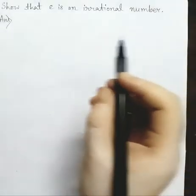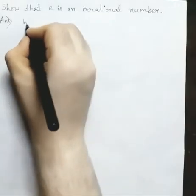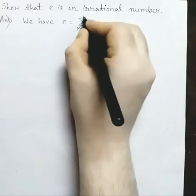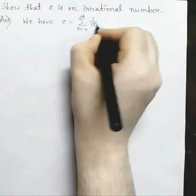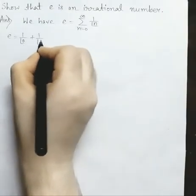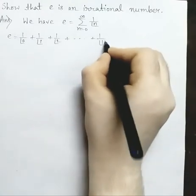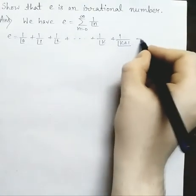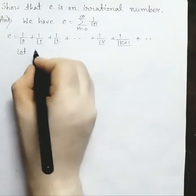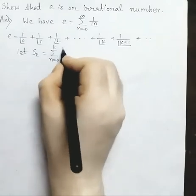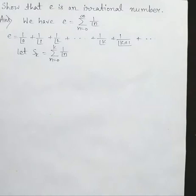e is an irrational number. We have e equal to summation over n equal to 0 to infinity of 1 by factorial of n, that is equal to 1 by factorial of 0 plus 1 by factorial of 1 plus 1 by factorial of 2 plus dot dot plus 1 by factorial of k plus 1 by factorial of k plus 1 plus dot dot. Let S_k equal to summation over n equal to 0 to k of 1 by factorial of n, that is S_k equal to 1 by factorial of 0 plus 1 by factorial of 1 plus 1 by factorial of 2 plus dot dot plus 1 by factorial of k.